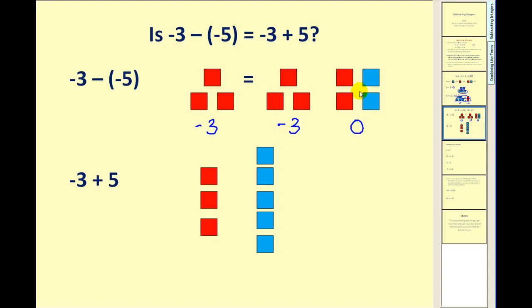Now the reason we want to introduce these is now we can take away 5 red squares. We can take away 1, 2, 3, 4, 5. This is like subtracting the negative 5.